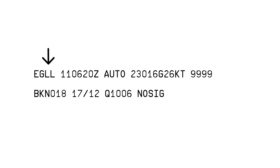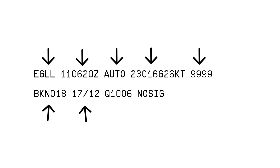Now we're going to take a look at Heathrow's METAR — that's the Heathrow airport ICAO code. 110620 means the day and time, and AUTO means this is an automatic METAR. 23016G26KT means 230 degrees heading, 16 gusting 26 knots wind speed. 9999 means unlimited visibility. BKN018 means broken clouds at 1800 feet. 17/12 means 17 degrees Celsius temperature and 12 degrees Celsius dew point. QNH is 1006, and NOSIG means no significant changes expected in the next few reports.